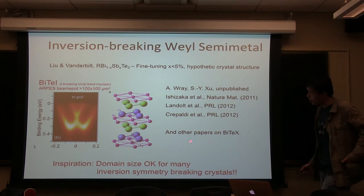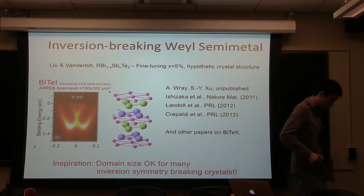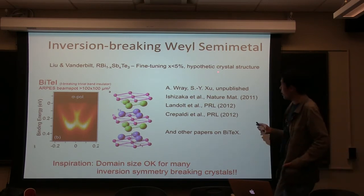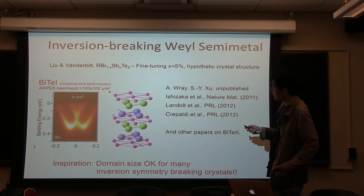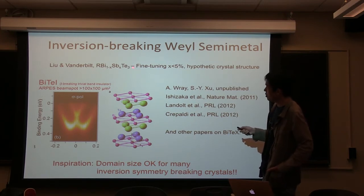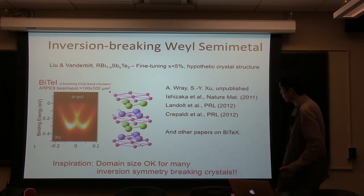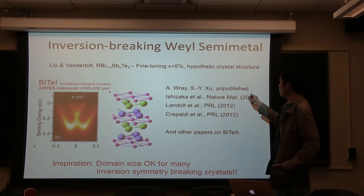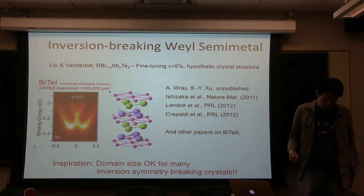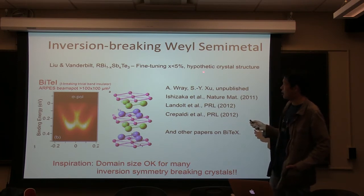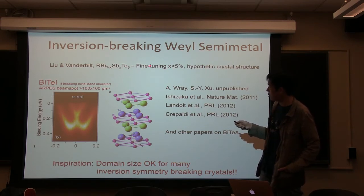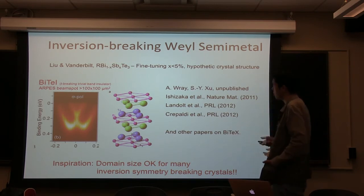Since time-reversal breaking is hard, we were wondering about breaking inversion symmetry instead. Before our work there was a proposal by Vanderbilt's group: they proposed that in a rare-earth bismuth antimony tellurium compound, calculating the band structure reveals a very fine region — below a 5% window — where there will be a Weyl semimetal phase, if one uses a crystal structure that breaks inversion symmetry. However, we found that the crystal structure they were using is actually hypothetical. Our sample growers told us it is extremely hard to actually grow crystals in that desired crystal structure, and it requires very fine tuning — only within that ~5% window.